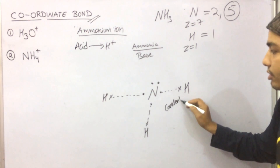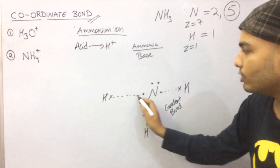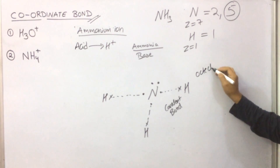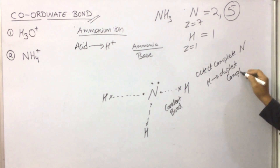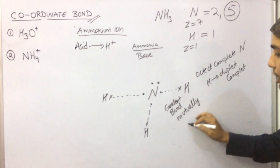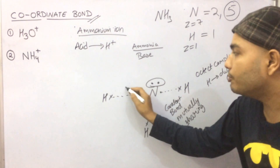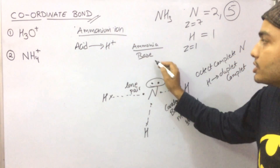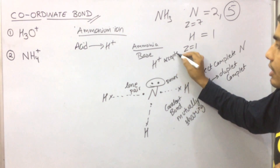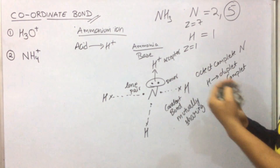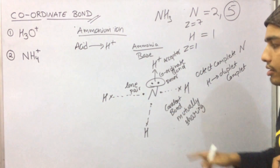Nitrogen now has eight electrons — octet complete. Each hydrogen has its duplet complete. These are three covalent bonds — mutual sharing, each contributing one electron. The two electrons that do not take part in bonding are called the lone pair. Now H+ comes and says it needs two electrons. Nitrogen says: okay, I will become the donor, you become the acceptor, and accept these two electrons. This bond is a coordinate bond.